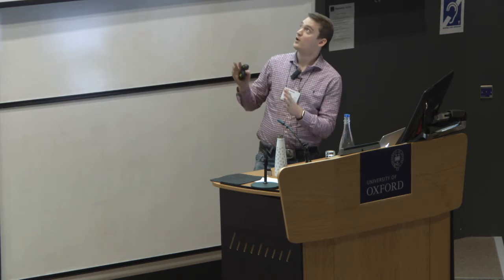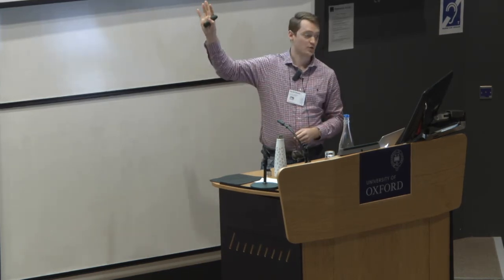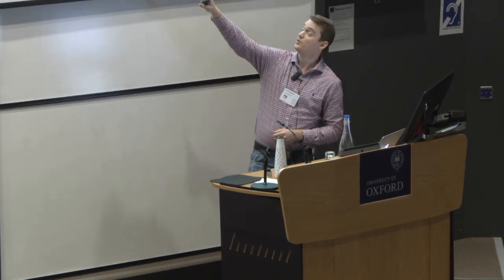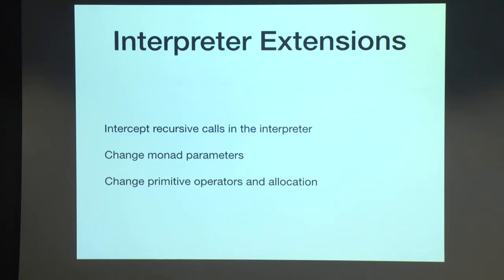And overall, the reason is so we can support interpreter extensions. So the first thing we can do is because we've done it in this unfixed style, we can now intercept the recursive calls in the interpreter to maybe do some kind of instrumentation or something else at each point in the recursion. We can swap out different monads to get different monadic effects in the interpreter. And then we can change the definitions of these primitive operations like alloc and the delta function.